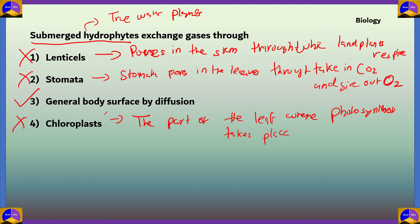Option 3 is the correct answer: general body surface by diffusion. Submerged hydrophytes absorb gases from the surrounding water through their entire body surface by diffusion. So option 3, general body surface by diffusion, is the correct answer for this question.